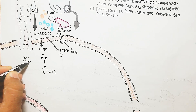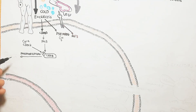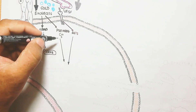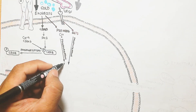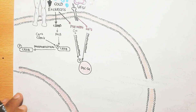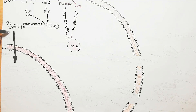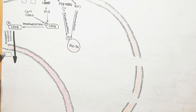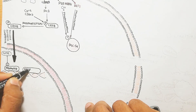Cyclic AMP activates protein kinase A (PKA), which then phosphorylates CREB. Calcium-calmodulin kinase (CaMK) also activates CREB, leading to CREB phosphorylation. On the other hand, AKT3 directly phosphorylates PGC1-alpha. This phosphorylation represents the activation of the PGC1-alpha protein, which is important for transcription of several genes.